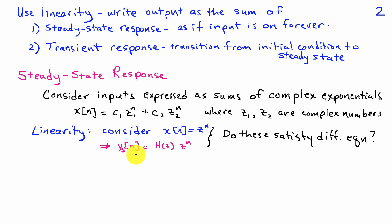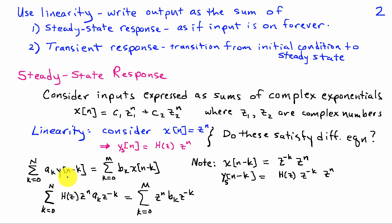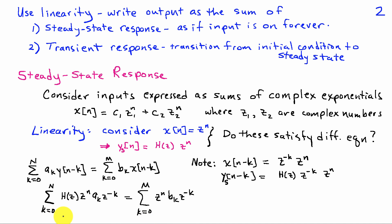It turns out — and we'll verify this in a moment — that the steady-state response to this input is H(z) times z^n, where H(z) is a constant that depends on the value of z. To verify this, I'm going to ask whether this input and output satisfy the difference equation. We observe that x of n minus k is z^{-k} times z^n, and y_s of n minus k is H(z) times z^{-k} times z^n. Substituting these into the difference equation gives the equation shown at the bottom, and we can satisfy this equation exactly for a particular choice of H(z).